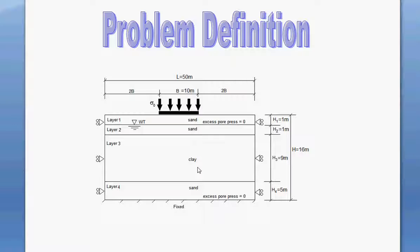A nine-meter thick clay layer is sandwiched between two sand layers. The water table is at a depth of one meter. The width of the footing is 10 meters. The total length of the domain to be analyzed is 50 meters and the total height is 16 meters. In terms of boundary conditions, we fix the base, place rollers on the sides, and impose zero excess water pressure at the water table level and at the base of the domain.